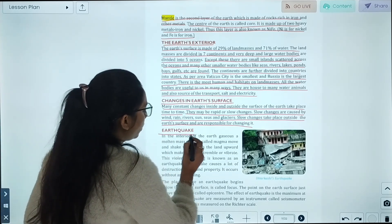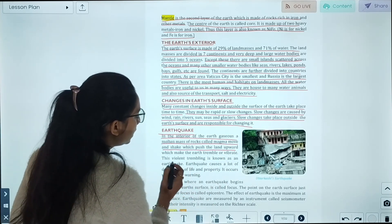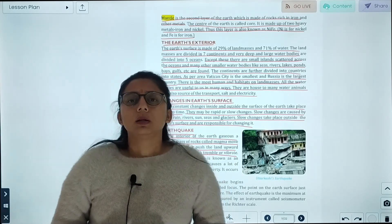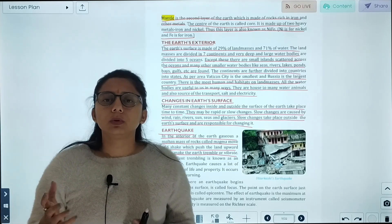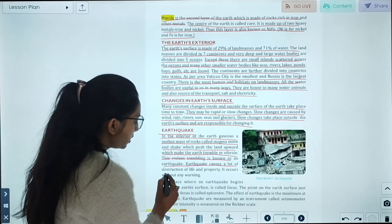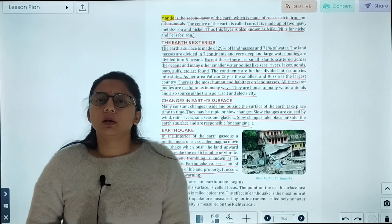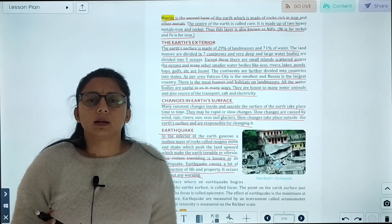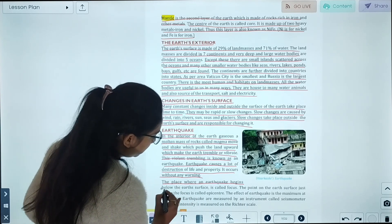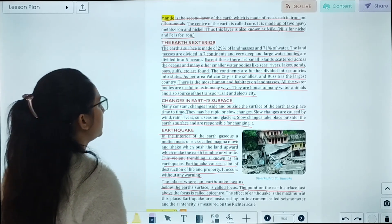Earthquakes occur in the interior of the earth where there is molten mass of rock. This molten mass can move and shake, which pushes the land upward and makes the earth tremble or vibrate. When we have an earthquake, there are a lot of vibrations. There is a lot of destruction of life and property. It occurs without warning. The place where an earthquake begins below the Earth's surface is called focus, and the point on the Earth's surface just above the focus is called epicenter.